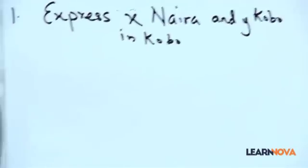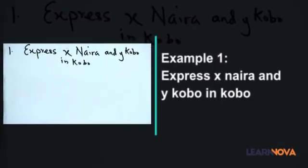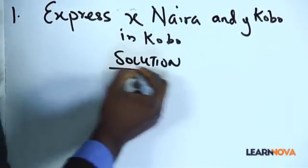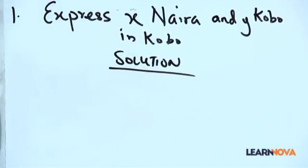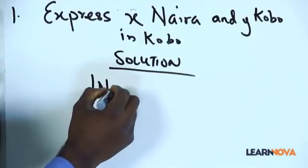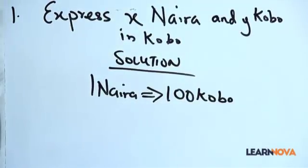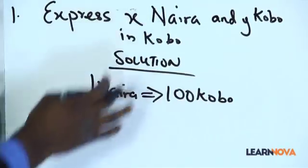The first example says: express X Naira and Y Kobo in Kobo. Now, for those of you who cannot remember the exchange rates — we don't use Kobo these days — one Naira is one hundred Kobo. So in our question, we need to change X Naira and Y Kobo into Kobo. We have to first convert X Naira to Kobo.